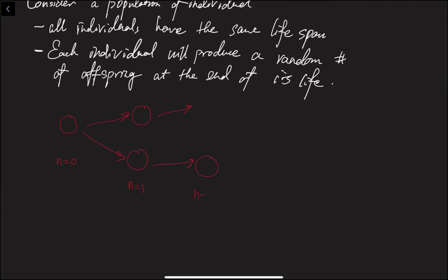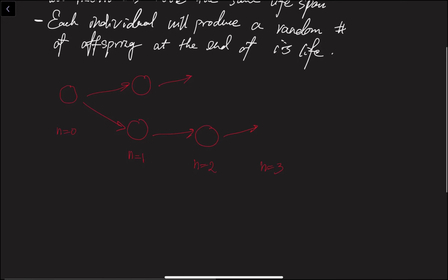And the second one at n equals 1 produces one offspring. This is n equals 2. And for this one, when n equals 3, it may have no offspring. Then our Markov chain enters an absorbing state, because there is no individual to produce any offspring, so we stay at this state forever. So x0 is 1, x1 is 2, x2 is 1, x3 is 0, and we stay here forever.